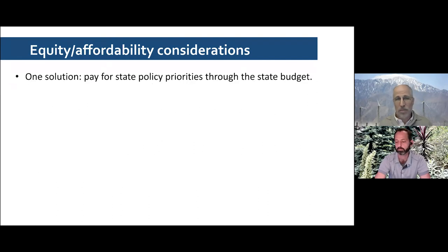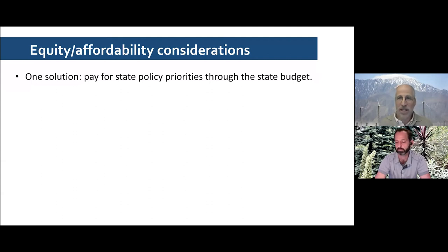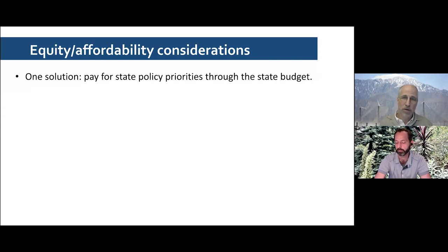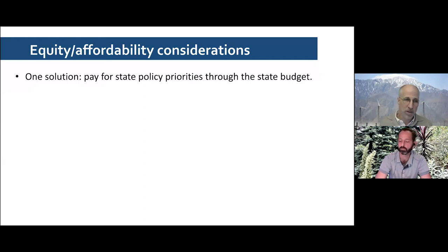One solution would be to pay for state policy priorities through the state budget. We have low-income programs for food and health care in California both paid for through the state budget. But we also have a low-income program for electricity paid for by increasing the charge for electricity for other customers — an inconsistency worth addressing.